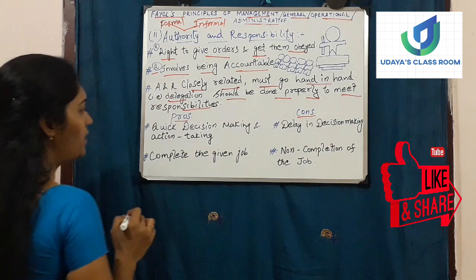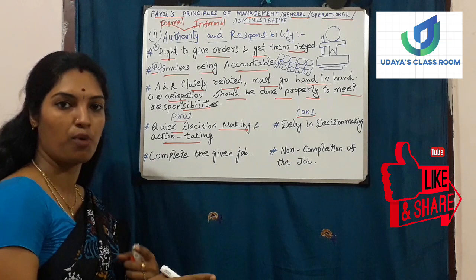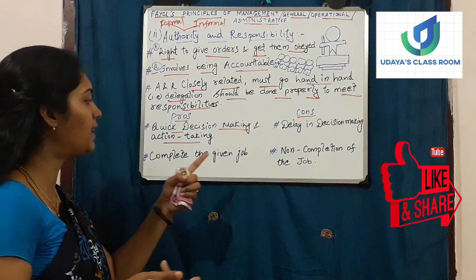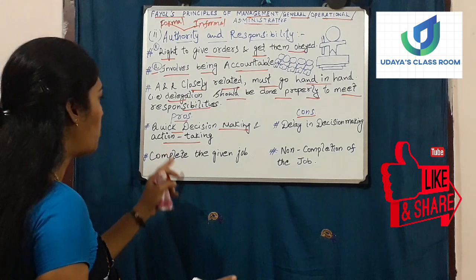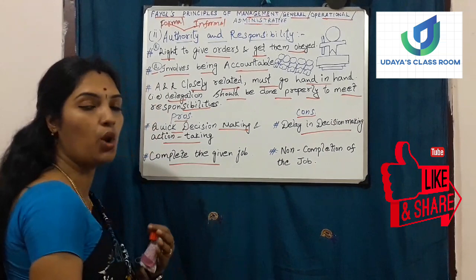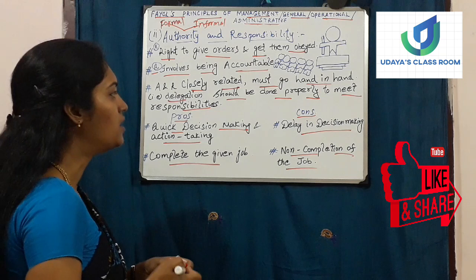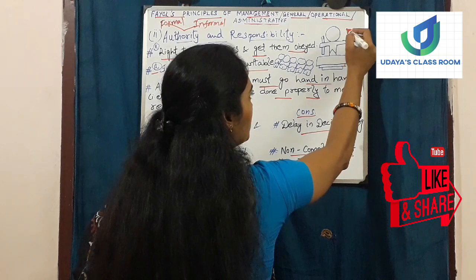Let us see the pros and cons of Authority and Responsibility. The first advantage is quick decision making and action taking: if authority is delegated properly to subordinates, decisions can be made immediately and actions taken immediately, completing the task. The cons: if authority is not delegated properly, there will be delay in decision making, the job cannot be completed immediately, and non-completion of the job will take place. Let me explain with a present-day scenario.